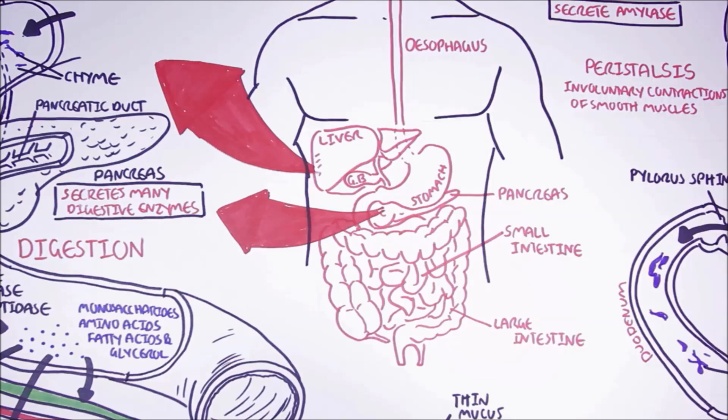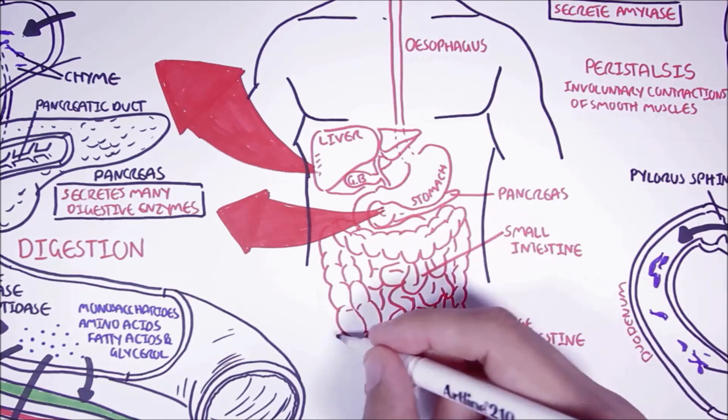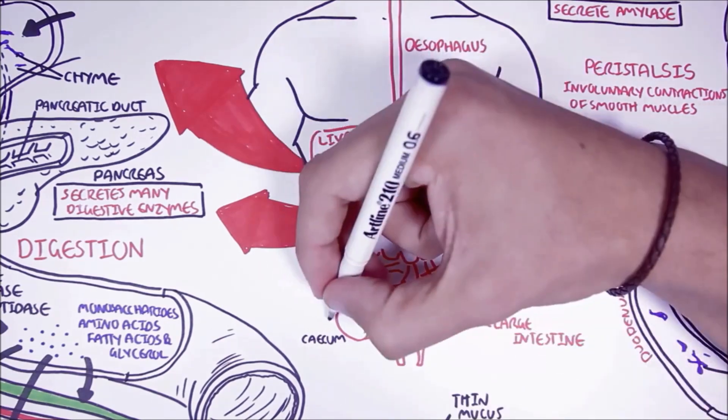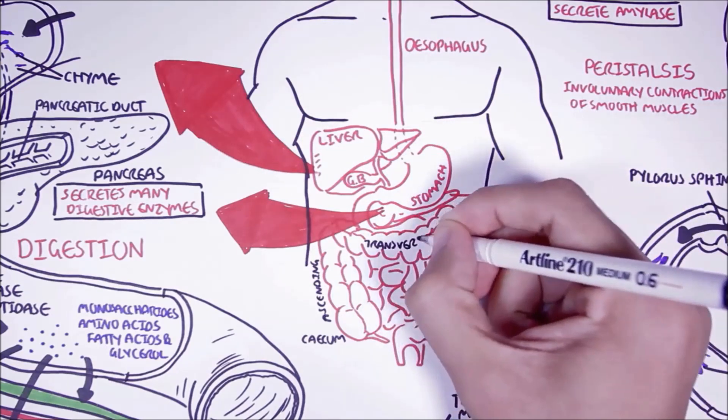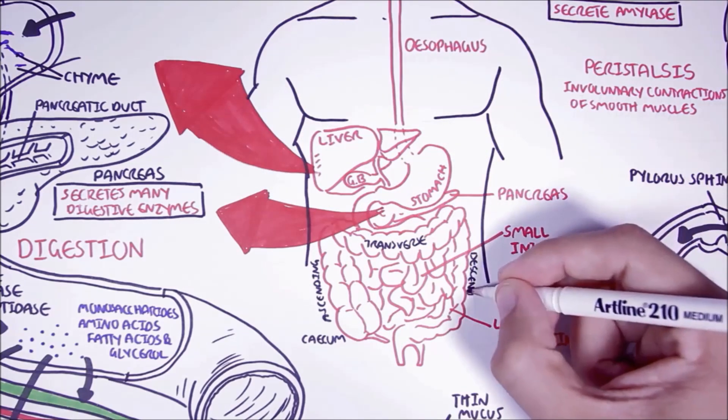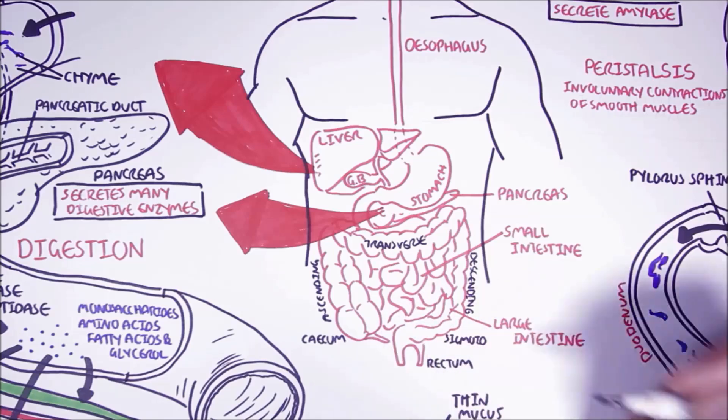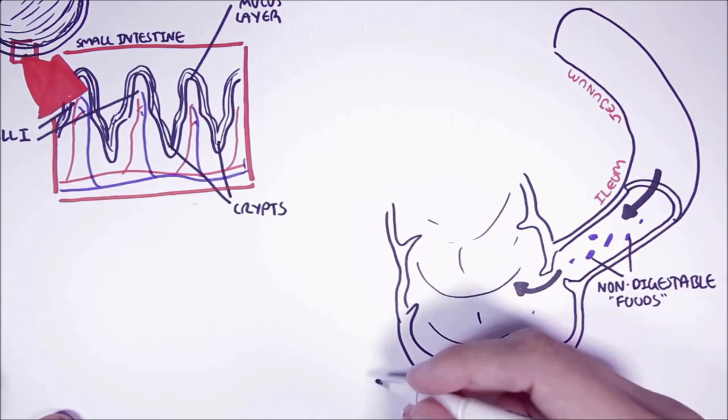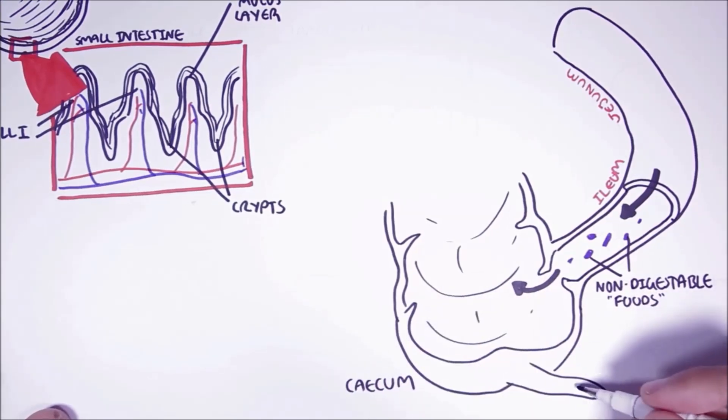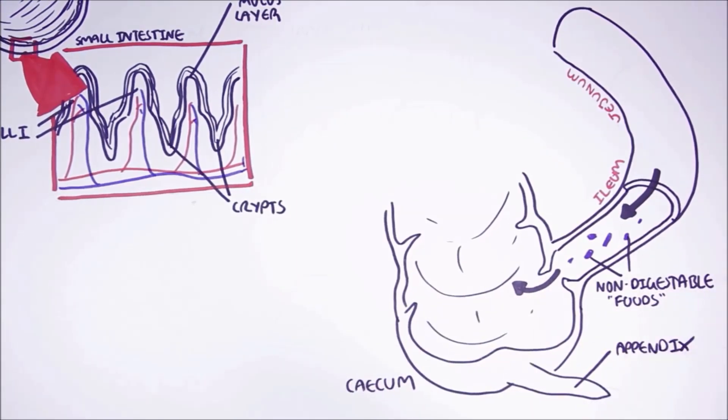The large intestine is divided into a few sections: the cecum, the ascending colon, transverse colon, the descending colon, the sigmoid colon, and the rectum. There is also the anus region. This pointy bit here is known as the appendix. It has a role in the immune system.